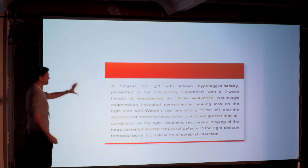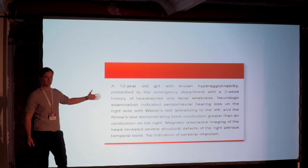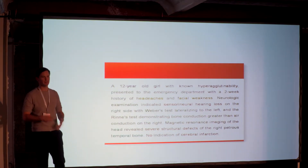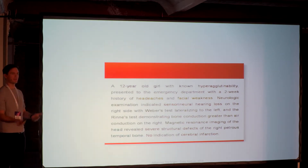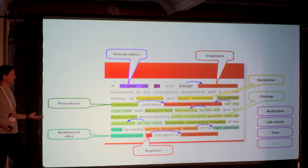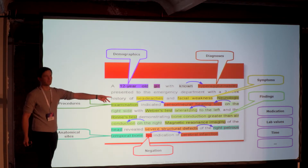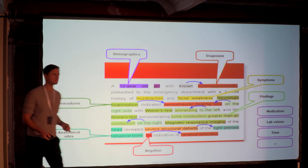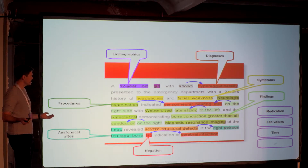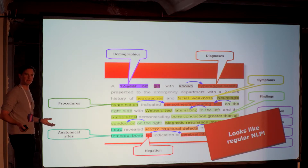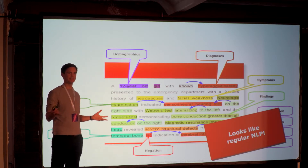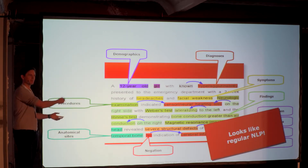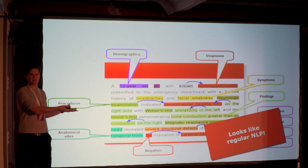Let's look at one unstructured data sample. This is a report of a 12-year-old girl who came to the hospital with a certain number of symptoms. What we want to do is extract all sorts of things — diagnosis, demographic information, procedures, negations, even things not in this specific snippet. At first glance this looks like regular NLP — natural language processing. If any of you have seen something like this before, it pretty much looks like regular NLP.